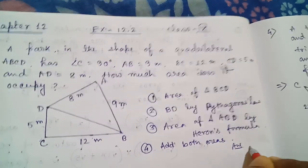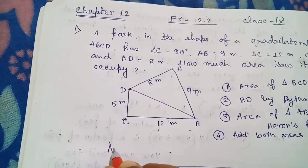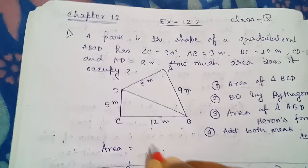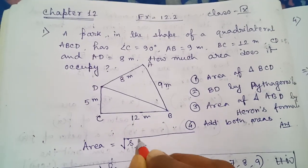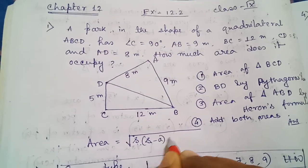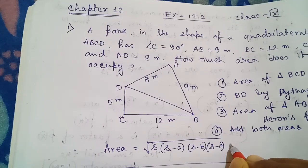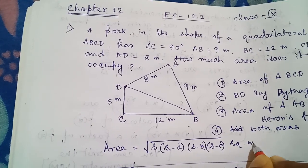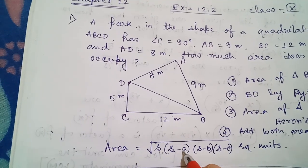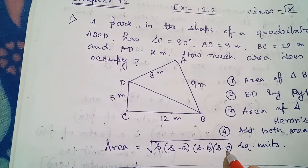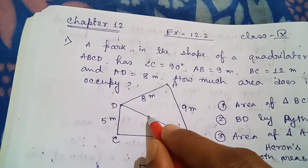For those who have forgotten, I'm just repeating it once. The area of a triangle by Heron's formula, when all three sides are known, is: square root of s(s−a)(s−b)(s−c) square units, where s is the semi-perimeter and a, b, c are the three sides of the triangle.